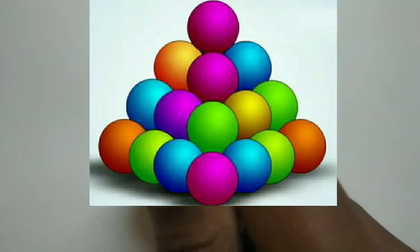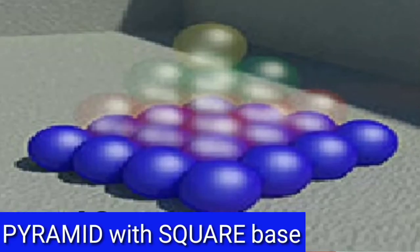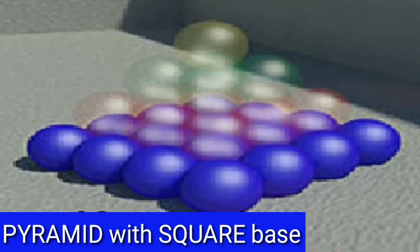Let us see the solution of the puzzle. If you observe the picture, the base is in the shape of a square. See the balloons of the blue colors. This is the first layer. 4x4 balls are there.